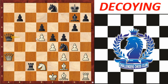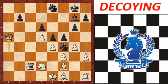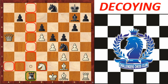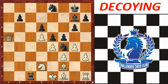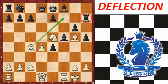Black plays Qa5, forcing the white queen to come to a5. With the white queen decoyed to a5, Black can now achieve the goal by playing Rc1. This was the example of decoying.